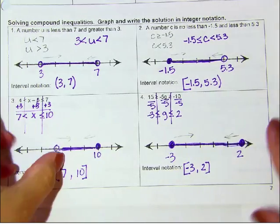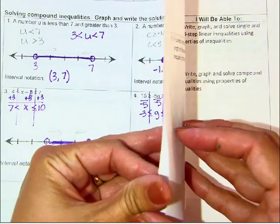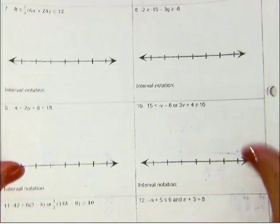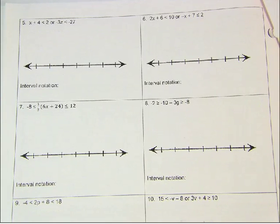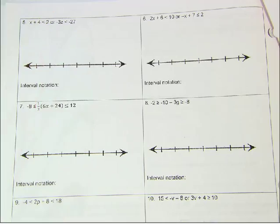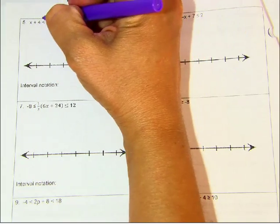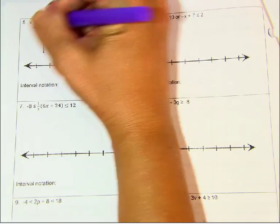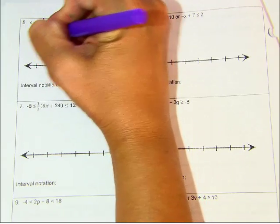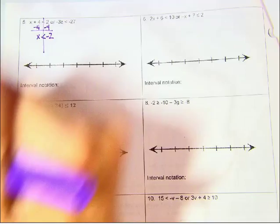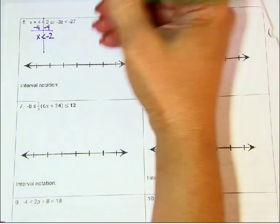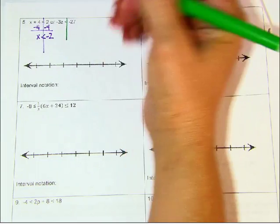On the next page, it has the word OR in between two inequalities. They are graphed on the same graph because it can be this OR it can be this. We're going to solve those separately. For this first one on the left, I need to get X by itself, so I'm going to subtract 4. So I have X, the symbol does not change, and I have negative 2. That one's solved. Now I need to solve this one on the right — pretend the Z is supposed to be an X, sorry about that. To get X by itself, I need to divide by negative 3.